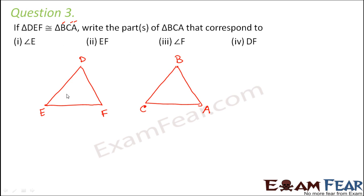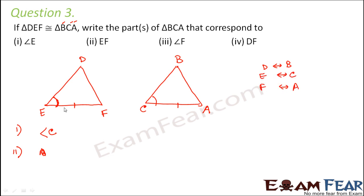Which angle corresponds to angle E? Definitely angle C. Which part corresponds to EF? Since E corresponds to C and F corresponds to A, EF corresponds to CA. For angle F — angle F corresponds to angle A. And DF corresponds to BA, since D corresponds to B and F corresponds to A.